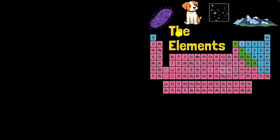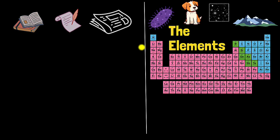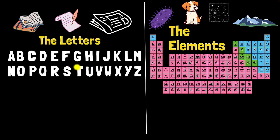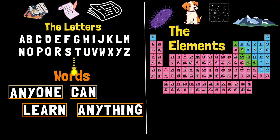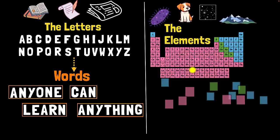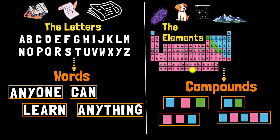Almost all the matter in the universe is made from about a hundred different elements — kind of like how all English words and sentences in books and poems are made from just 26 letters. What I love about this analogy is we can take it one step further: just like letters combine in interesting ways to form words, these elements can combine to form substances we call compounds.